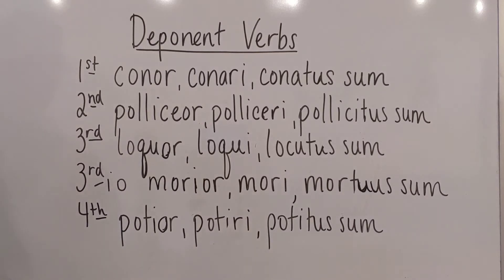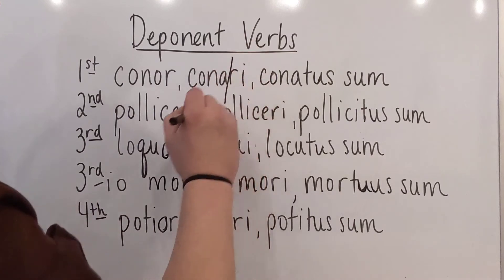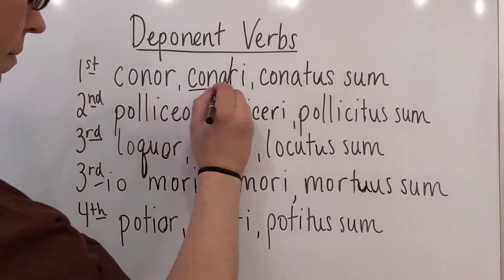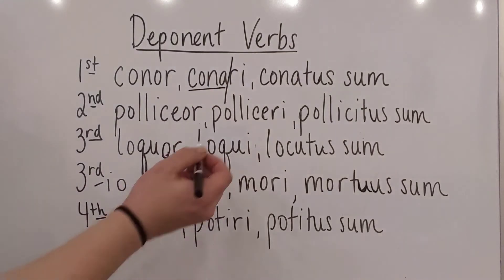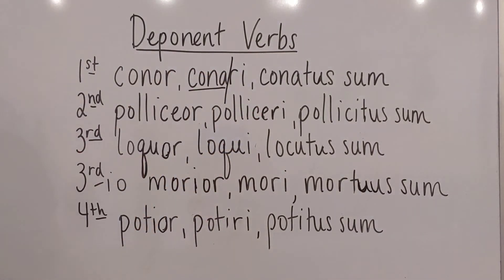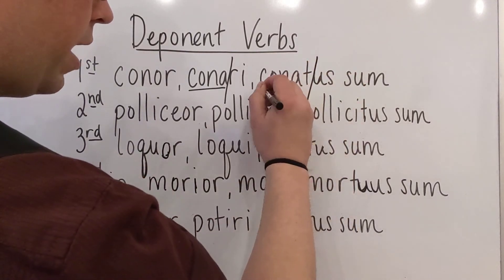So for a first conjugation, just like with its normal verb counterpart, you would chop the -re off the second principal part to get the present stem: conat-. And notice that the stem ends in an -a, just like it does in a normal verb. And then the supine stem is going to be conat-.